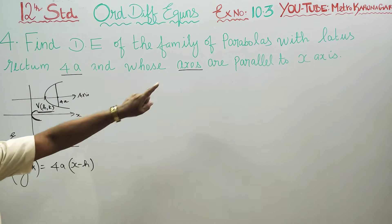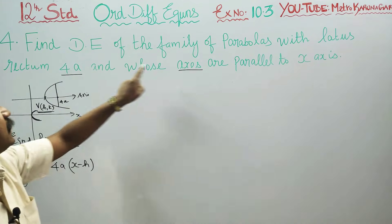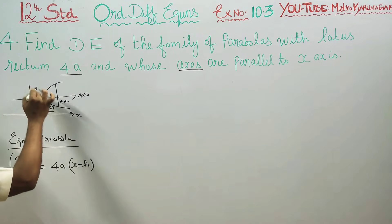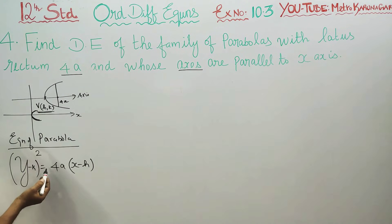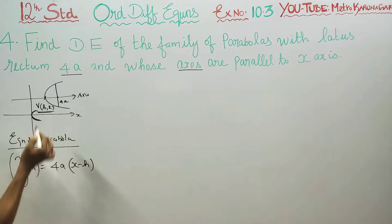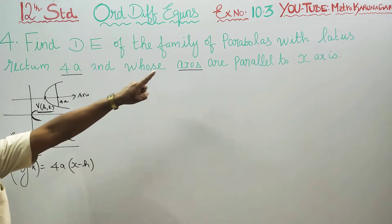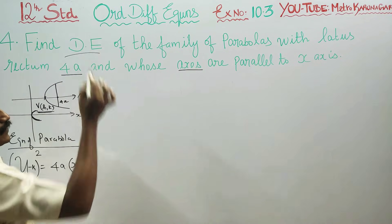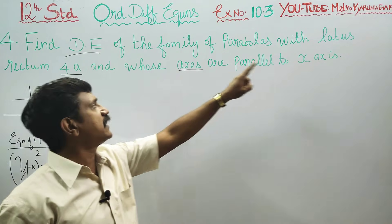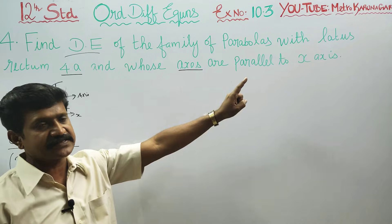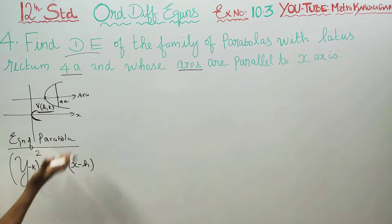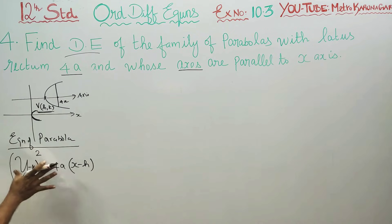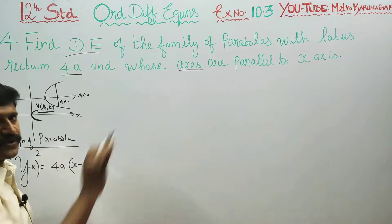The axis is parallel to the x-axis. Open right and open left — you are in the left-hand direction. The family of parabolas with the latus rectum and axis parallel to the x-axis includes both open right and open left. This is the equation we will form as the differential equation.